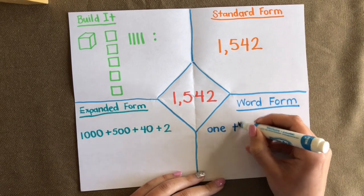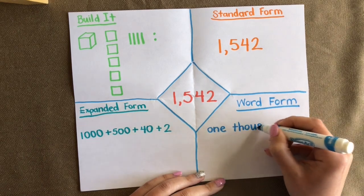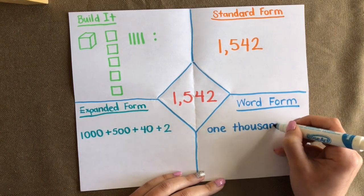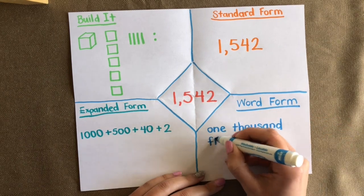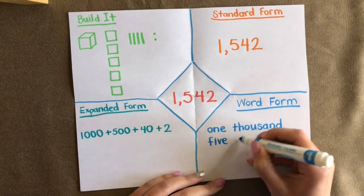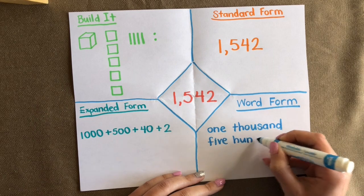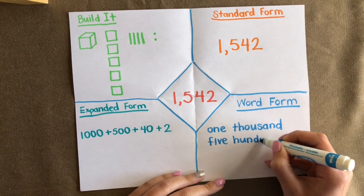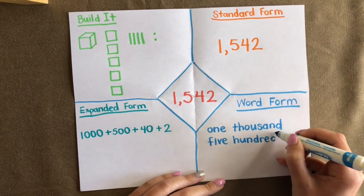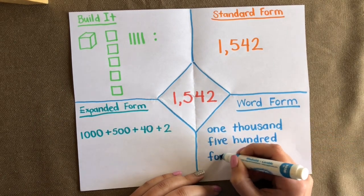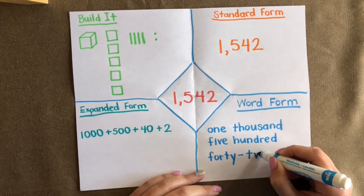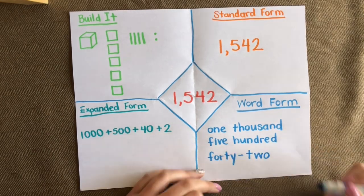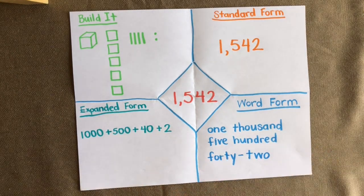And in word form: one thousand five hundred forty-two. Remember the dash goes between the tens and the ones. That's how you write the word form of 1,542.